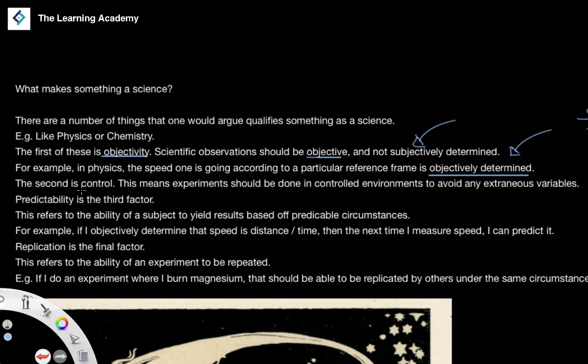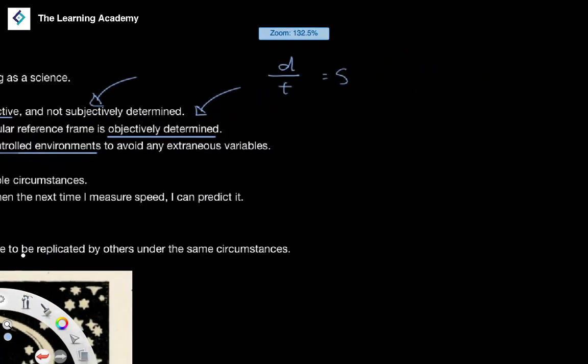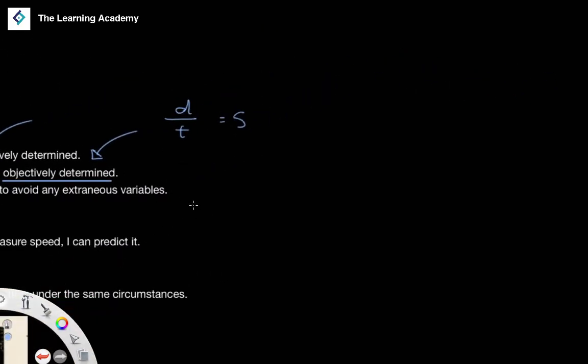The second characteristic of a science is the concept of control. This means that experiments can be done in a controlled environment to avoid any kind of extraneous variables. So an example of this is the measurement of speed in a vacuum, for example, within physics. And the point is that we should be able to eliminate these, what we call extraneous variables or externalities.